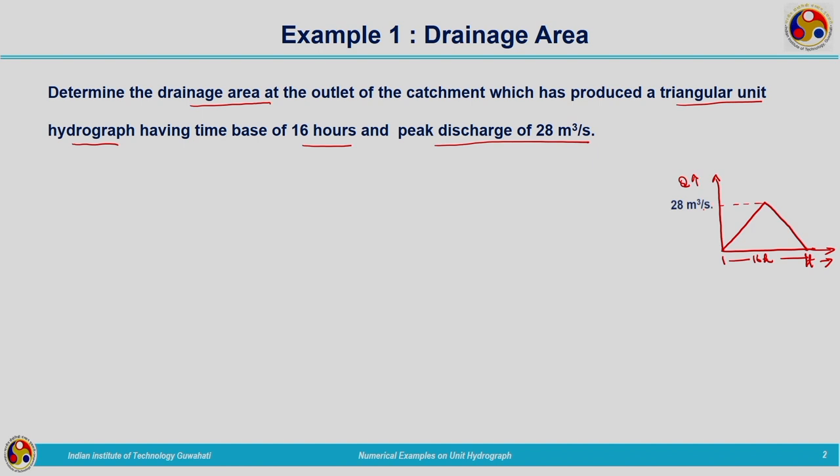A unit hydrograph is the response of the catchment for a unit rainfall — that is 1 centimeter of rainfall acted on the catchment uniformly. If you calculate the area under the curve it gives you the volume corresponding to that particular rainfall, that is the volume of water drained at the outlet. That volume divided by the rainfall depth gives you the area of the catchment.